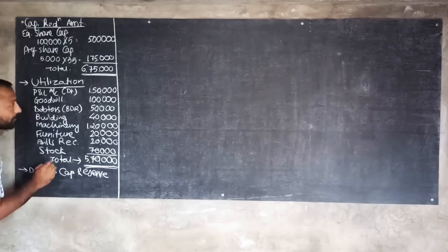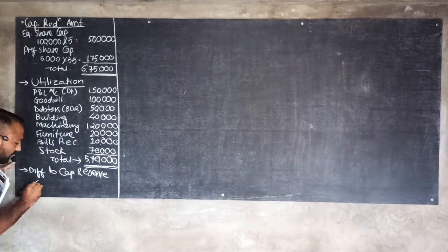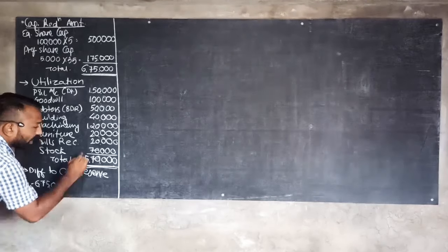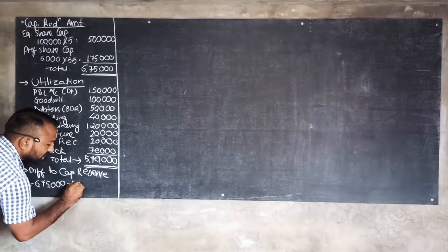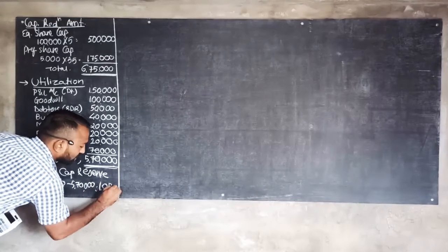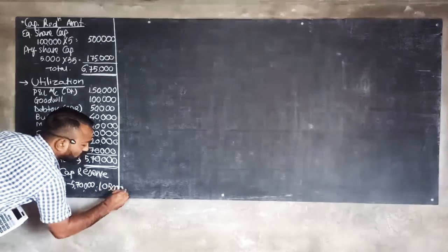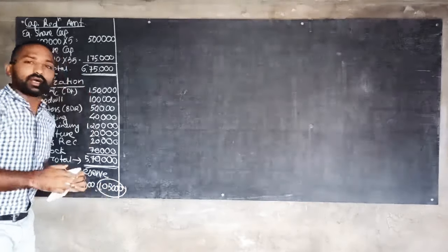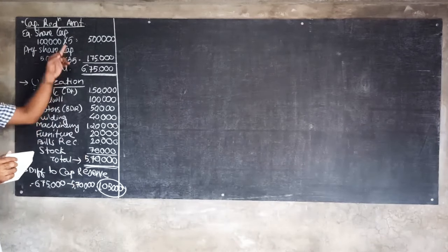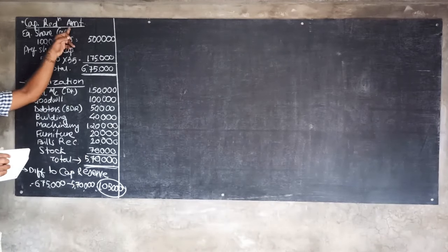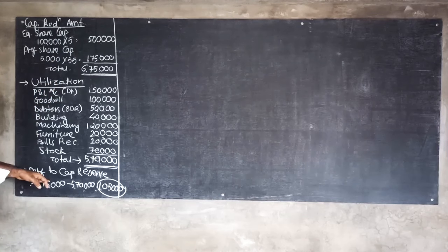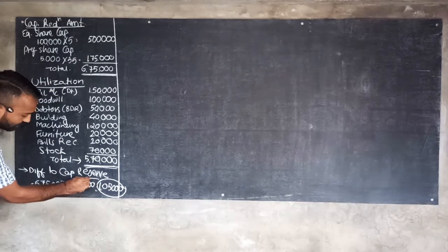Step 3: find the difference between capital reduction amount and utilization, and transfer it to capital reserve. Capital reduction amount is rupees 6 lakhs 75,000 minus utilization of rupees 5 lakhs 70,000 = rupees 1 lakh 5,000. This amount of rupees 1 lakh 5,000 is transferred to capital reserve.